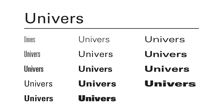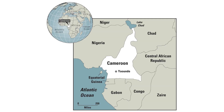Univers is another good choice for maps. It includes a wide range of variations, including extended and condensed versions, and some really compressed ones. And here it is on some maps.